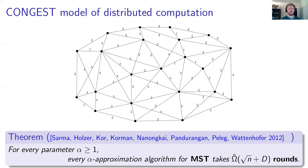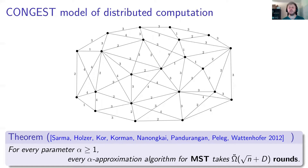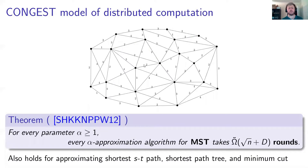So what they show specifically is that for every alpha which is polynomial in n, every alpha-approximation of the MST will take you at least square root n plus d rounds, hiding some polylogarithmic factors. This is quite big. For example, computing just a spanning tree will take you only d rounds. And there's actually nothing special here about the MST — their lower bounds also hold for problems like approximating shortest path, shortest path tree, and minimum cut. In addition, there are matching upper bounds.